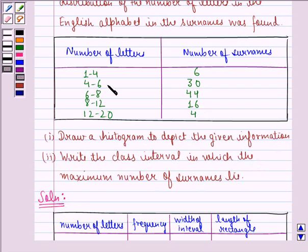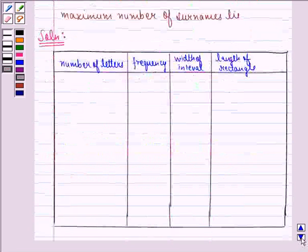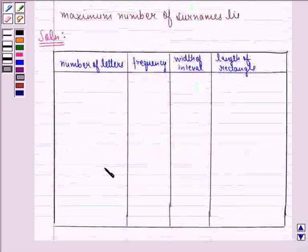What we notice in this table is that class size of each interval is not same. So we make another table where we have 4 columns.